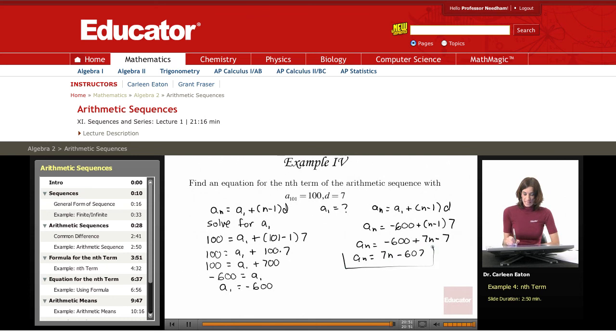So I had to take an extra step here because I wasn't given the first term. But since I was given another term, I could find the first term. And then I went ahead and used that to find the equation for the nth term for this sequence, which is a sub n equals 7n minus 607.